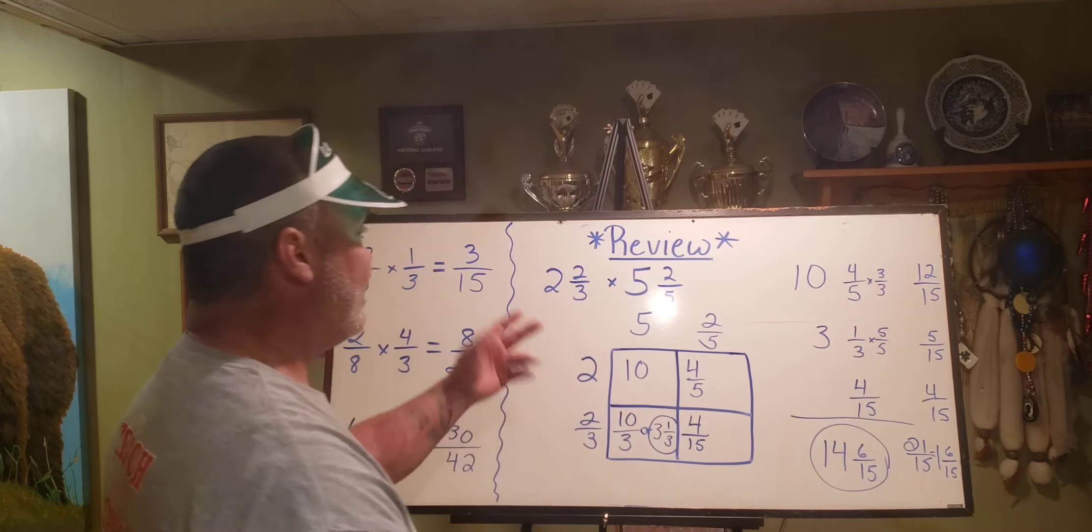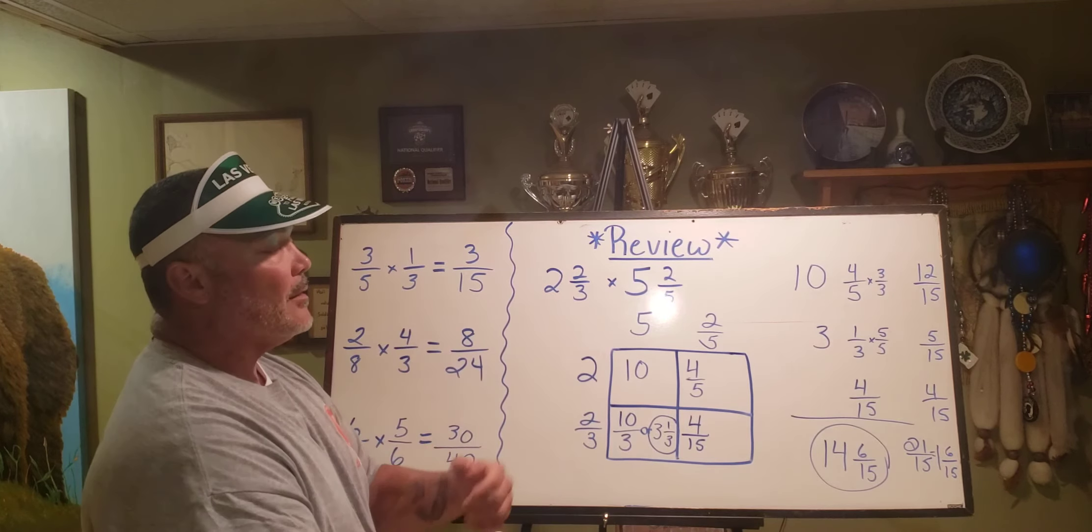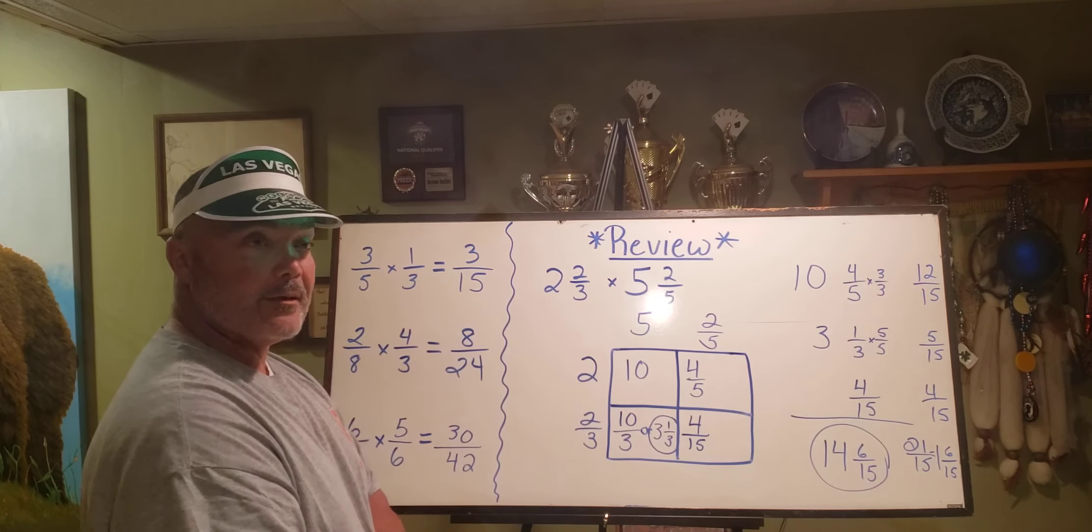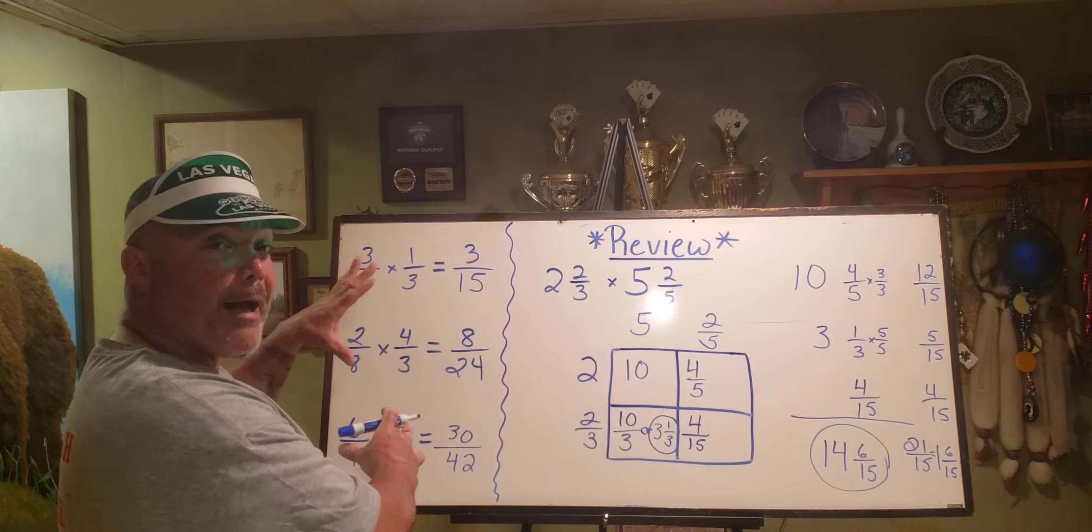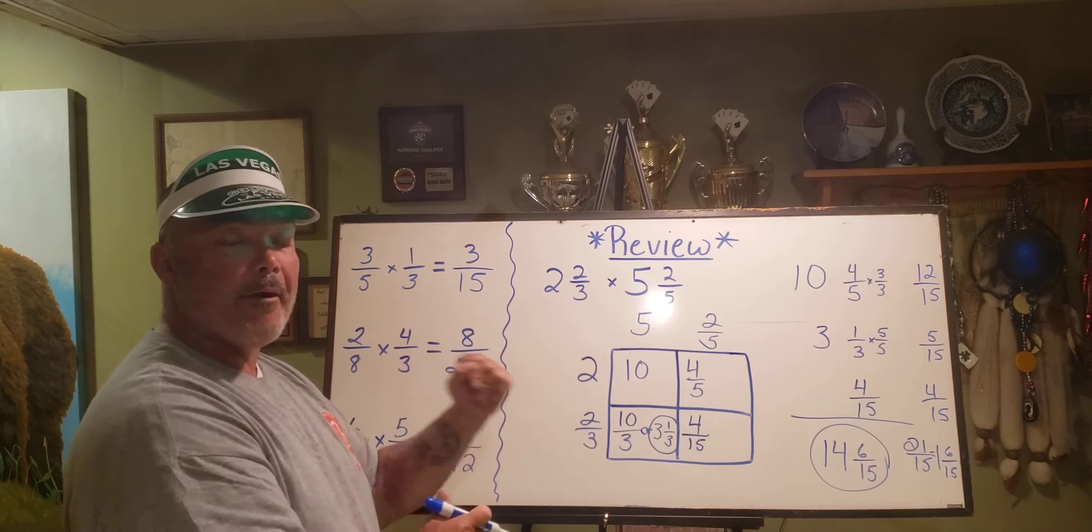So when I multiply two and two thirds times five and two fifths, I come up with fourteen and six fifteenths. This is the review of multiplying regular fractions and mixed numbers using an area model.